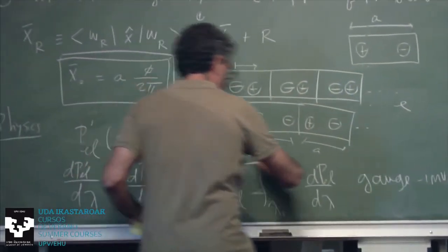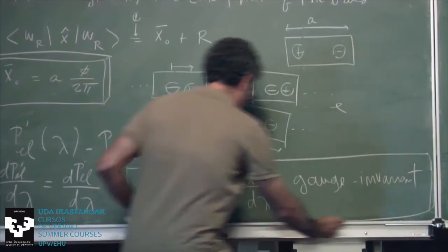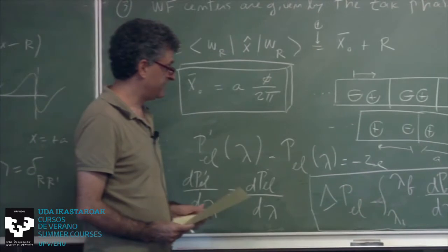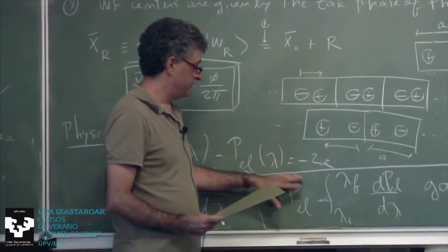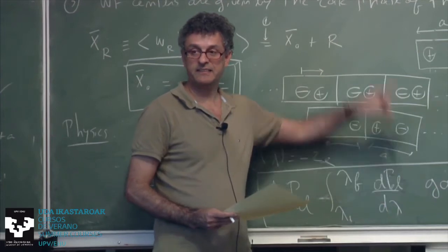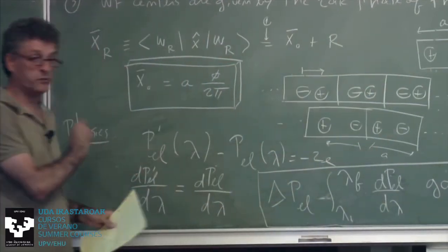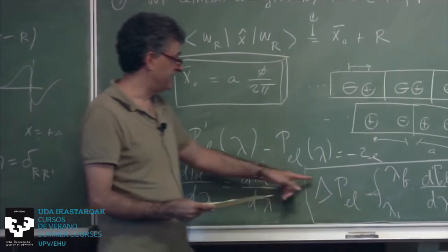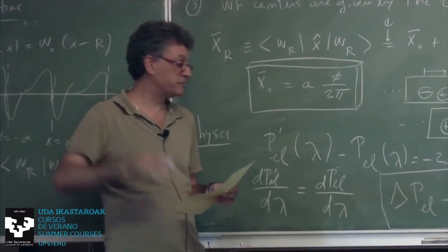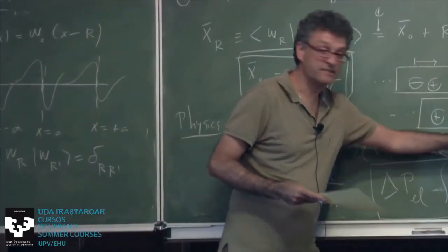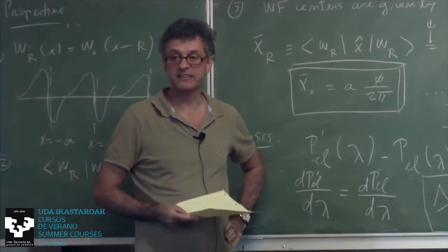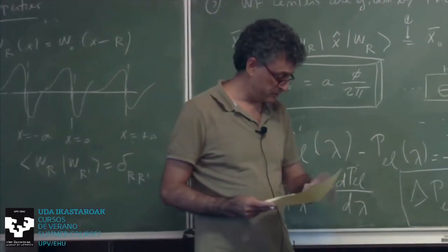I will not have time to go through it, but at the mathematical level, if you look at the original paper by King-Smith and Vanderbilt, this expression is actually related to a Berry curvature in a two-parameter space where one axis is k and the second axis is λ. So you have a two-dimensional hybrid space k-λ, you can define a curvature there, and that's why it's gauge-invariant from the mathematical point of view.